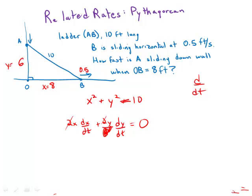Okay, we can divide by 2. And then what I'm going to do is let's just plug in numbers right now. And so we have X is 8, we have dx/dt, the change in X, how fast X is changing, that's 0.5. At this particular moment, we have Y equals 6, and we'd like to know dy/dt.